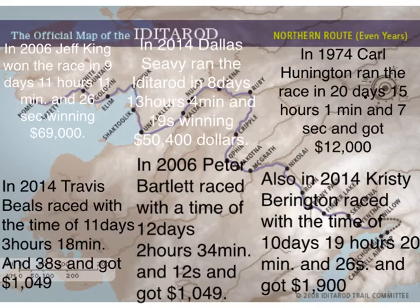In 1974, Carl Huntington ran the race in 20 days, 15 hours, 1 minute, and 7 seconds, and got $12,000.